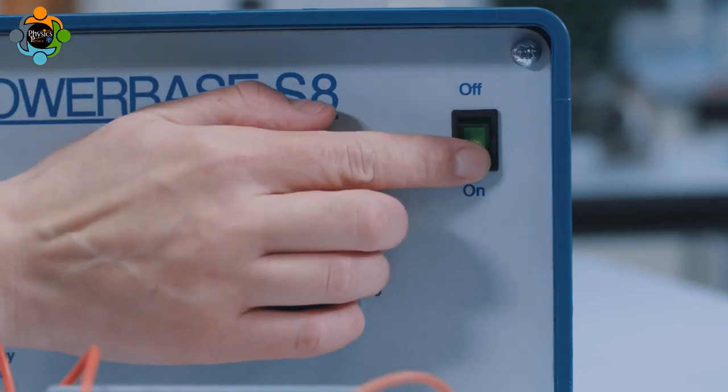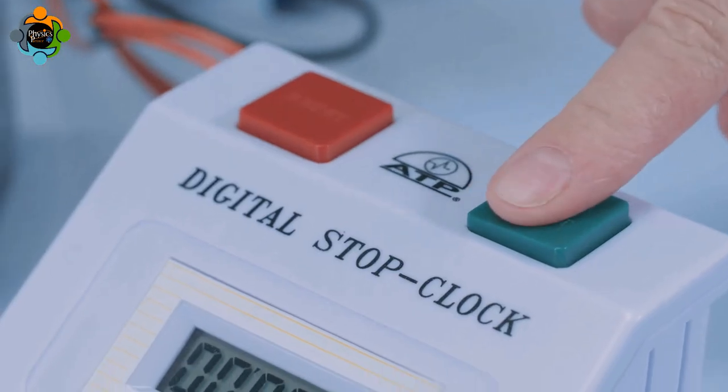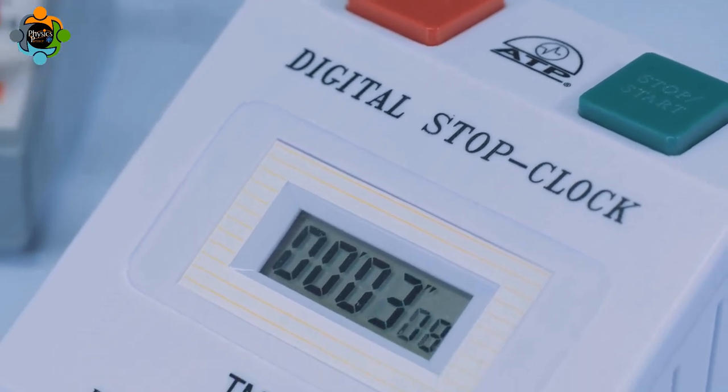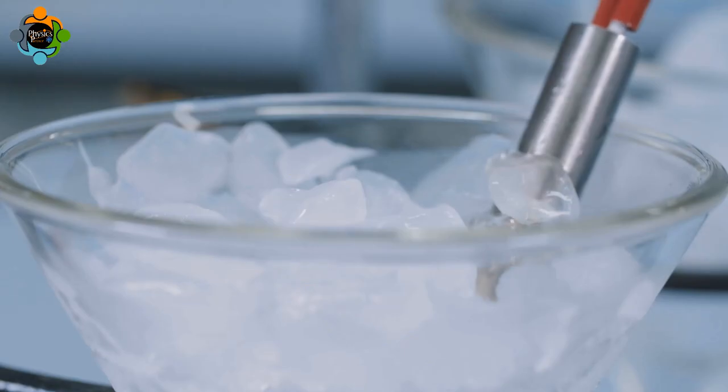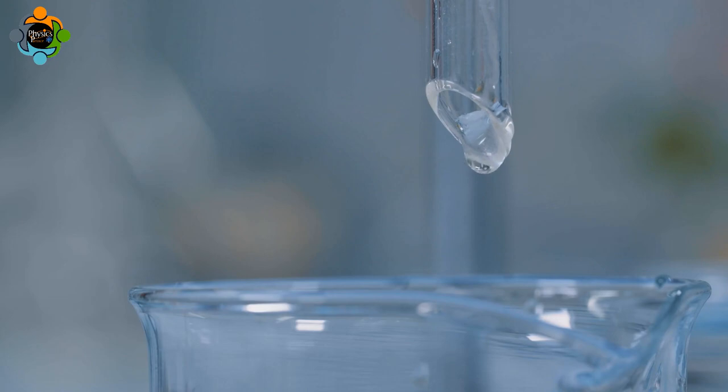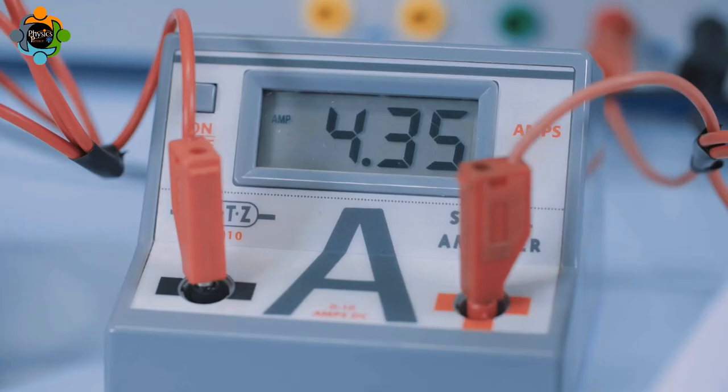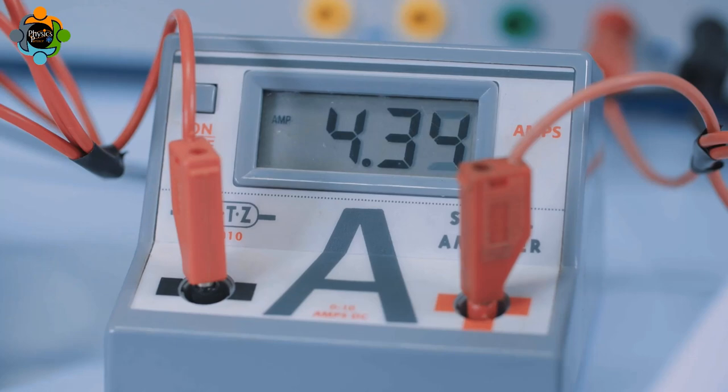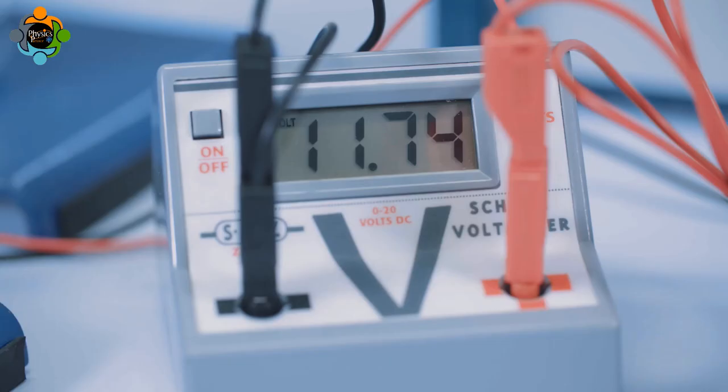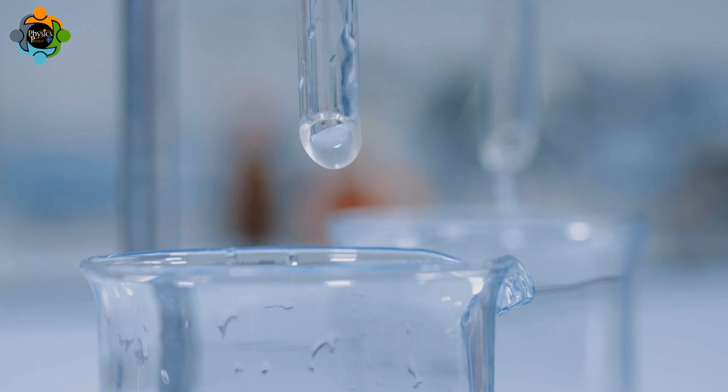The immersion heater is turned on and the stopwatch started. Readings of current and potential difference need to be recorded. These should be constant. When finished, record the time for which the immersion heater is on.